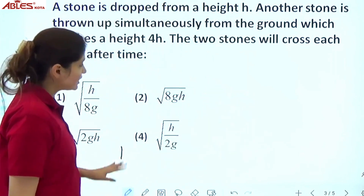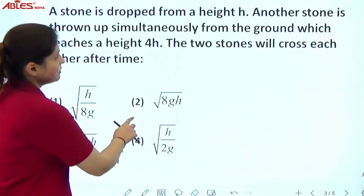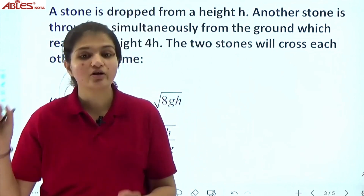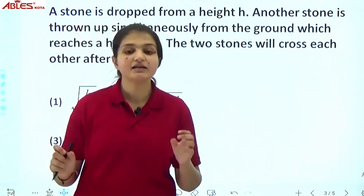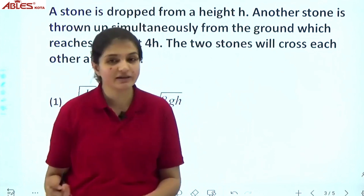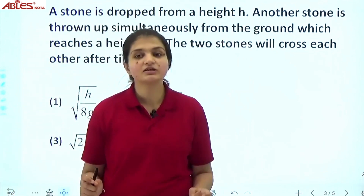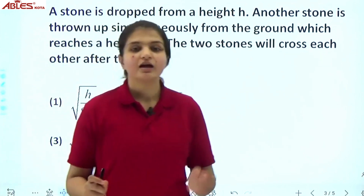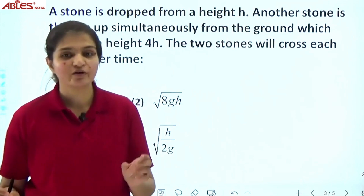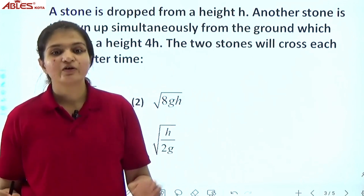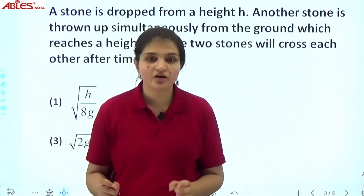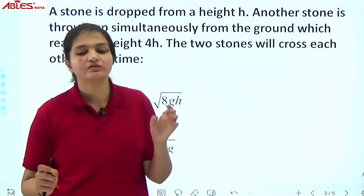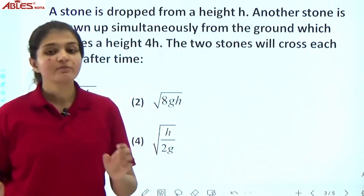So there is a stone which has been dropped from a height H. Another stone is thrown up simultaneously from the ground, which reaches a maximum height of 4H. The question asks: when will the two stones cross each other?